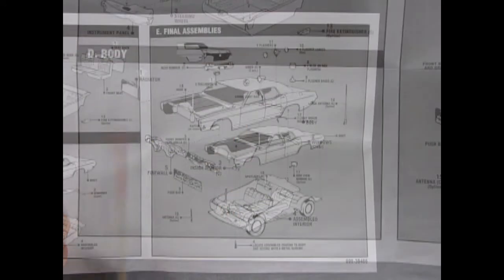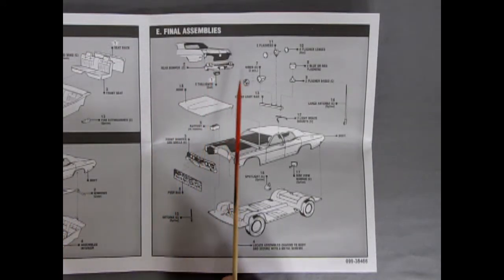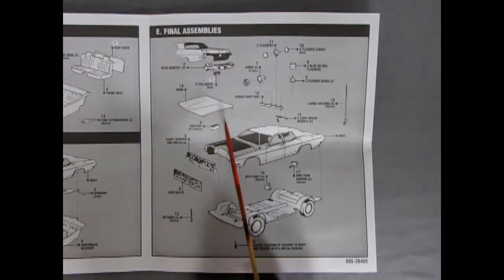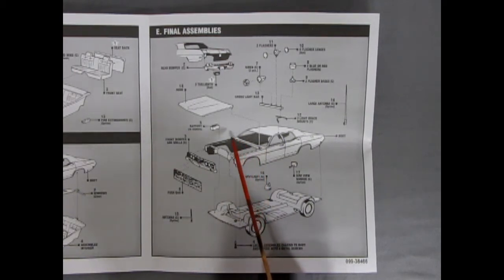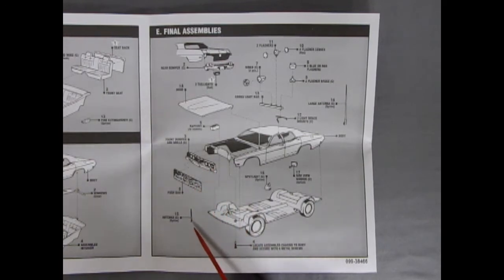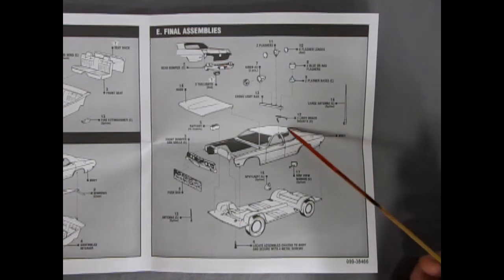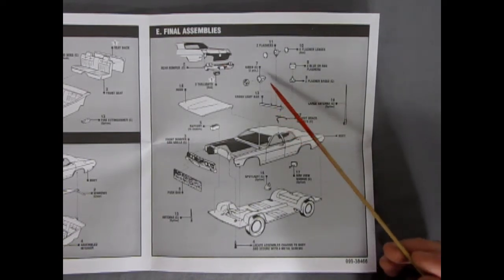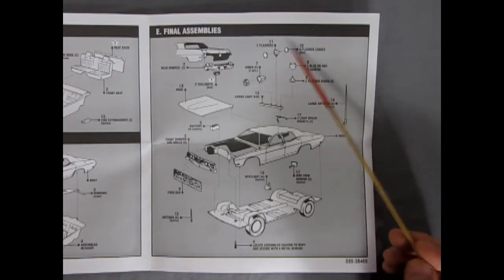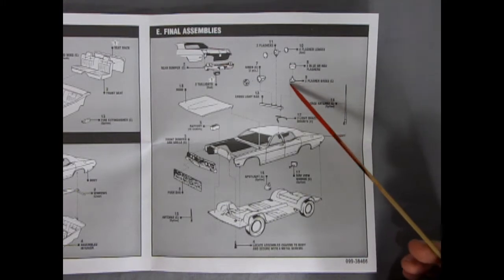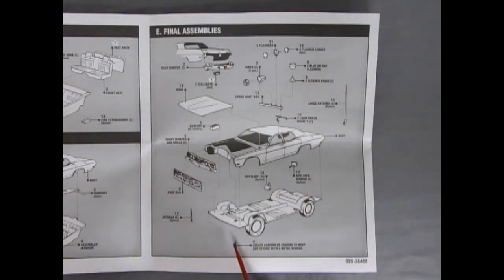Here's our final assemblies with our rear bumper popping up into the body. We've got two red tail lights, then our hood dropping down to cover that big mill, as well as a battery, the front bumper and grill, and our push bar going in here with our antennas. We've got our spotlights and side view mirrors as well as a large antenna for our CB radio, two light brace mounts, a cross light bar, our siren in the center, and then our flashers up top with our two blue or red base flashers and the flasher base.